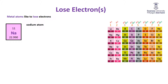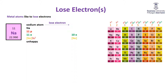Metal atoms like to lose electrons, so let's start with sodium. Its symbol is Na, it has 11 protons and 11 electrons. Its electron configuration is [Ne]3s¹, and it's unhappy because it's not a noble gas. The nearest noble gas to sodium is neon, which has 10 electrons. So sodium, having 11 electrons, would lose that 3s electron — obviously the one keeping it from being a noble gas — and once it has that noble gas electron configuration, it is happy.